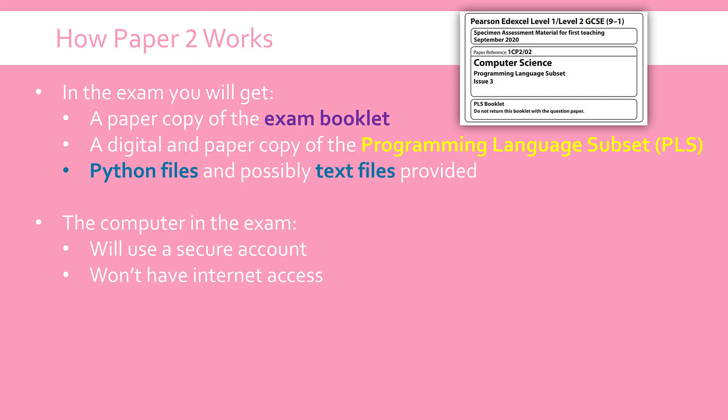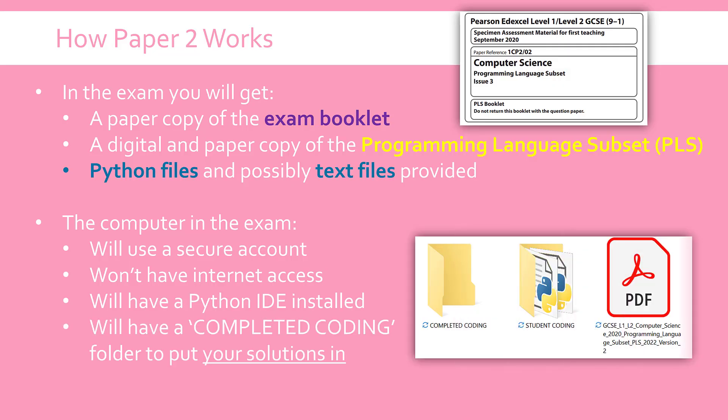You can't have access to the internet, so you can't look things up, although you can look within the PLS. You're going to have a Python IDE installed — the IDE is the program used to write the Python code. Make sure you know what this is ahead of time and get it on your own computer at home if you're able to, to practice using it. Some of the more useful tools like debugging tools you could try and learn ahead of time. Make sure you've got line numbers enabled, because the exam might say go to line 17, and if you don't know how to get those up in your IDE that would be a problem. On the computer there will be two folders: one called 'completed coding' and one called 'student coding'. The files they give you go in the student coding folder, and as you complete your answers you put them in the completed coding folder.